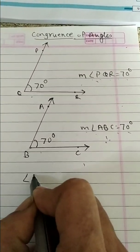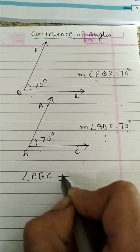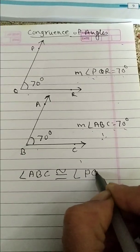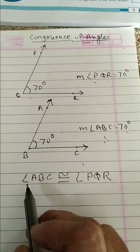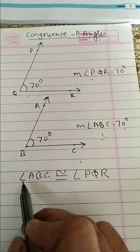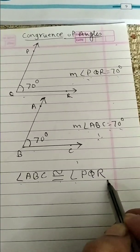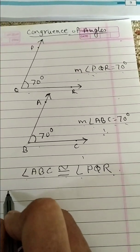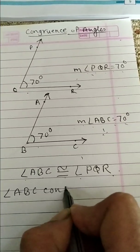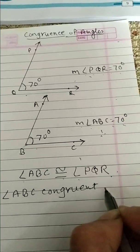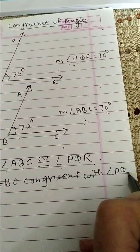How to write angle ABC congruent with angle PQR? Like segments, we also write about the angles. Here angle ABC congruent with angle PQR. This is the writing and reading: angle ABC congruent with angle PQR.